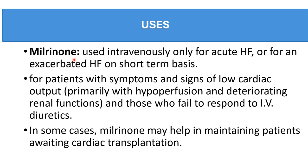Uses of phosphodiesterase inhibitors: milrinone is used intravenously in acute as well as exacerbated heart failure on a short-term basis for patients with symptoms and signs of low cardiac output and those who fail to respond to intravenous diuretics. In some cases, milrinone may help to maintain patients awaiting cardiac transplantation.